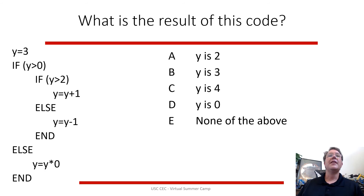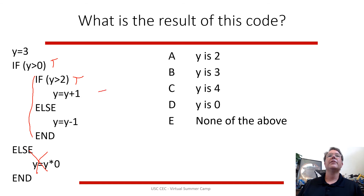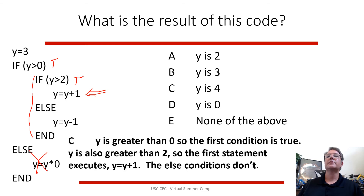Here's a nested if example: y equals 3. Is y greater than zero? Yes — the true branch executes. Is y greater than 2? Yes — so y gets incremented by 1, making it 4. The other conditions won't be met with this value of y, so only that one branch executes. This is how you trace which code executes and which never will.